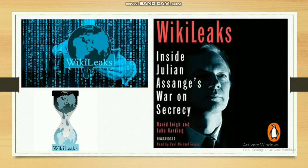Julian Assange was once featured by Time Magazine as one of the best persons of the year. However, many governments, especially the American government, were against him because much of the data he published was against the wars in Afghanistan, Iraq, Syria, and so on.